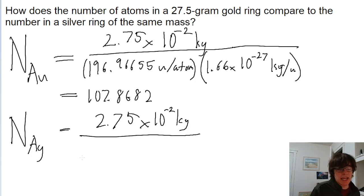Using the same principle we did for the gold one, the mass of a single atom of silver is 107.8682 atomic mass units per atom.